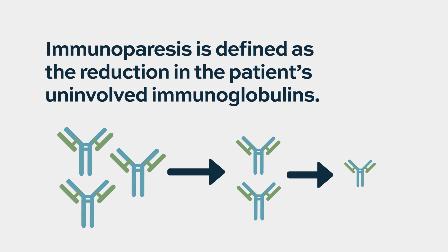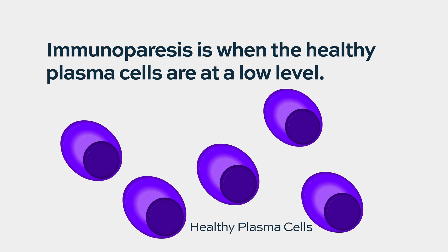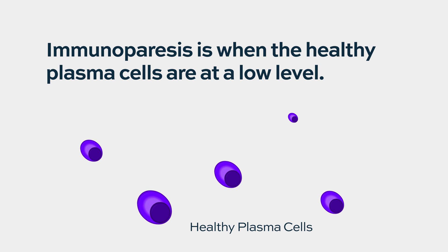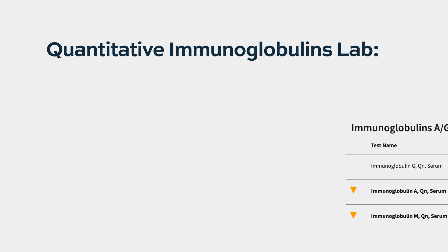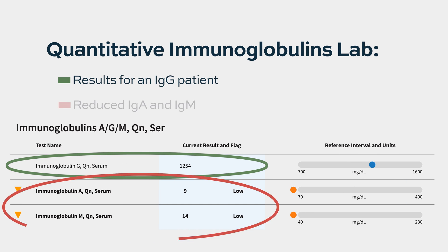We see that the healthy plasma cells that are supposed to produce the other IgA, IgM — whatever is the healthy part — are reduced in their function. So if, for example, an IgG patient has a reduced IgA or IgM, that we call immunoparesis. The same is true for an IgA patient who has reduced IgG or IgM, and the same for IgM.